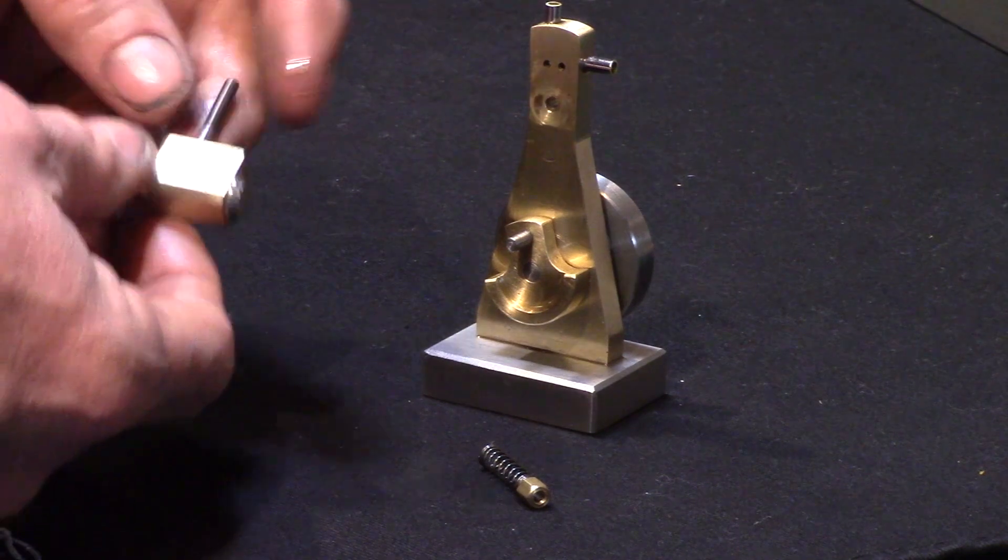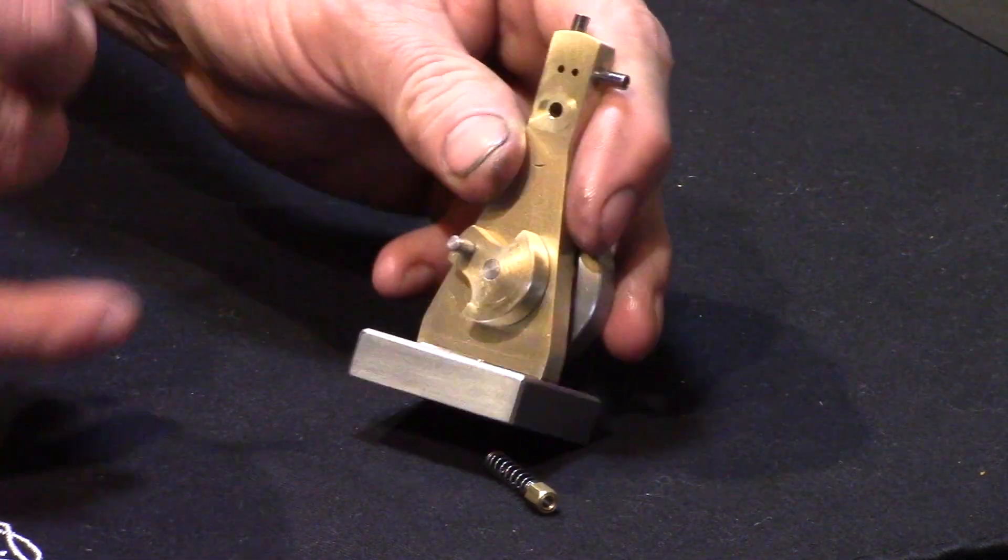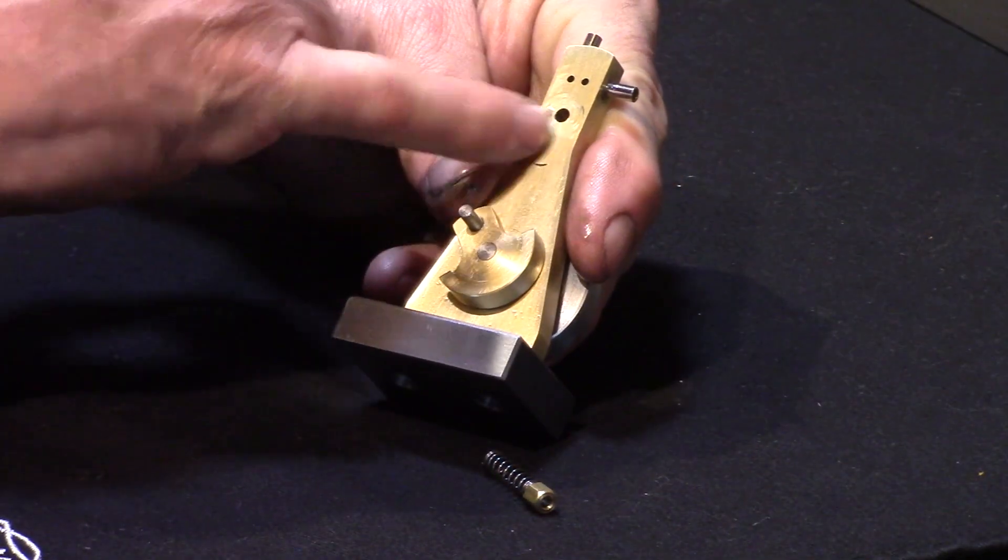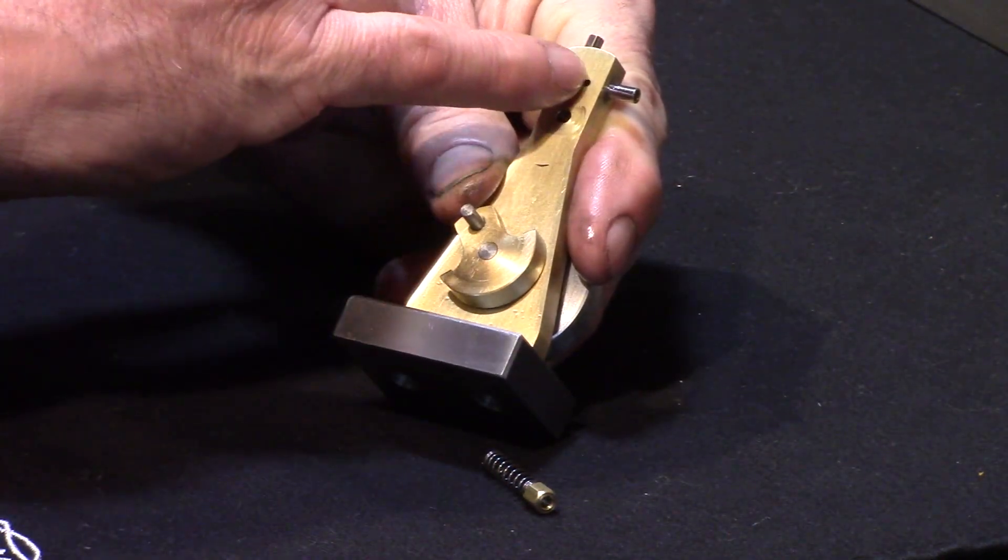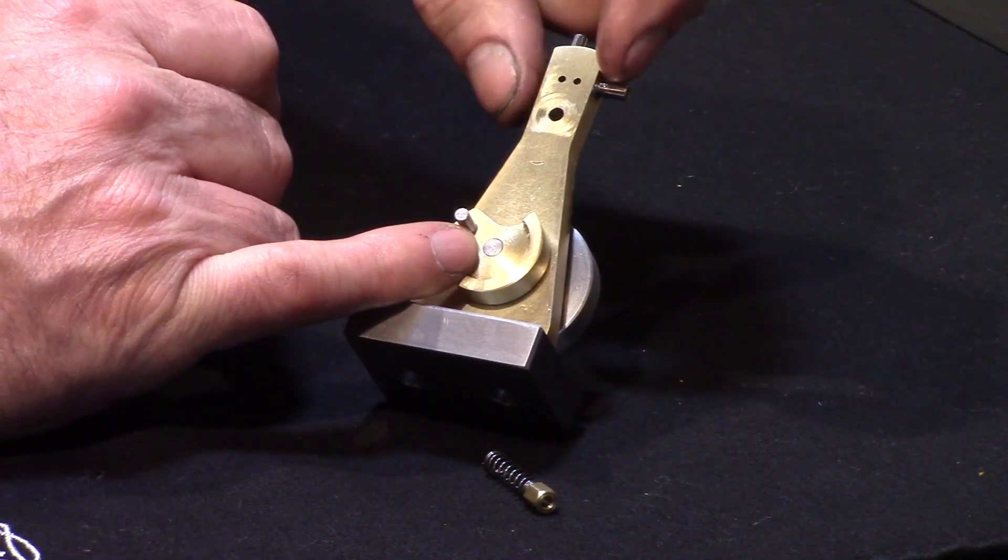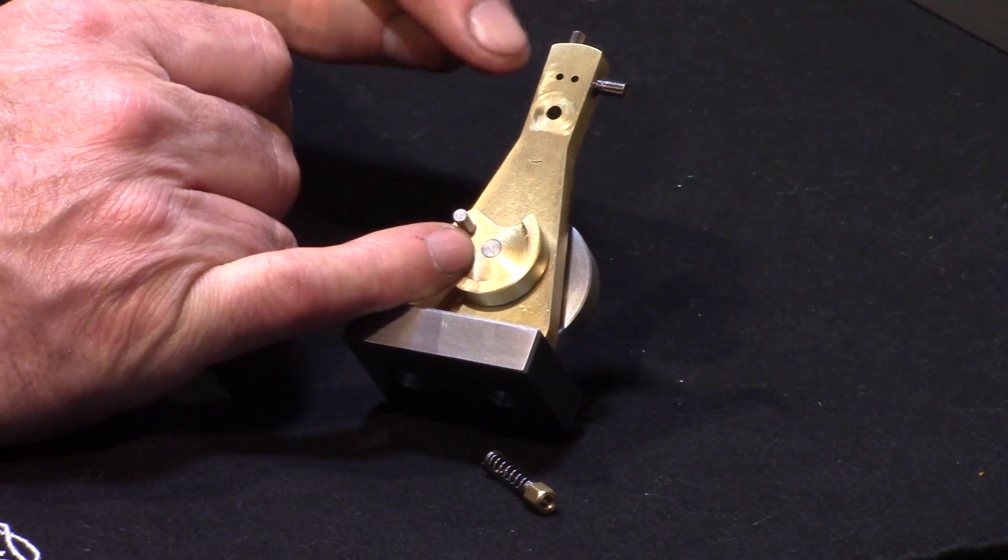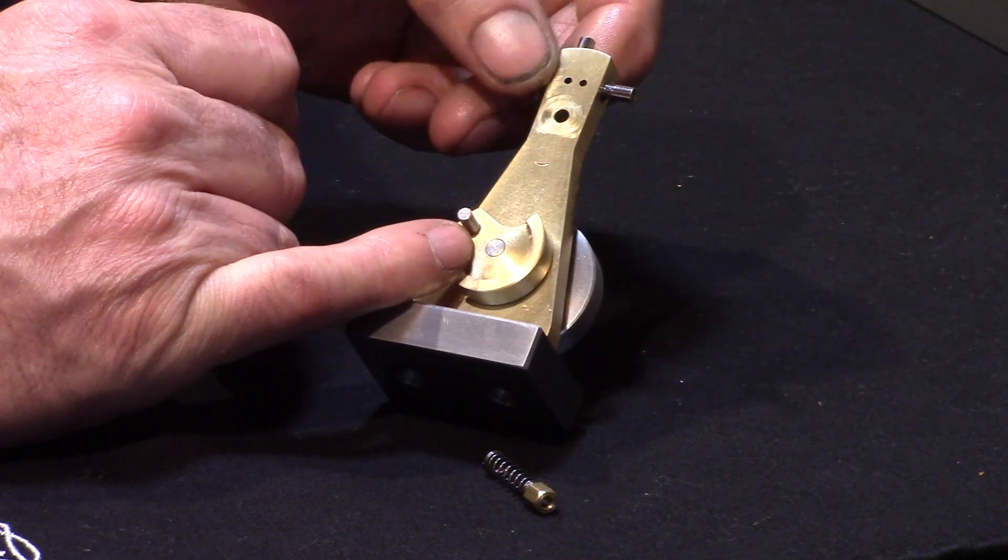And there you go. I'll just put that back together. Obviously that's the port face there, a little bit of scoring where it's been running in, but two tiny ports. So that's drilled through on the side to link up with the right hand side port, and then obviously the left hand side port is the exhaust port.